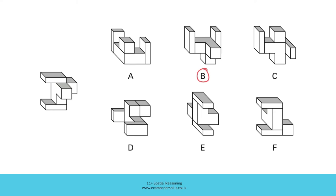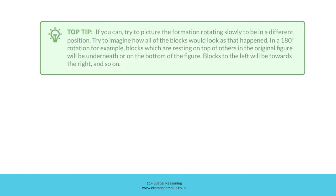Option B represents a rotated version of the original figure with all of the blocks having the right relationship to one another. Top Tip: if you can, try to picture the formation rotating slowly into a different position and imagine how all of the blocks would look as that happened. In a 180-degree rotation, for example, blocks resting on top of others will be underneath, and blocks to the left will be towards the right, and so on.